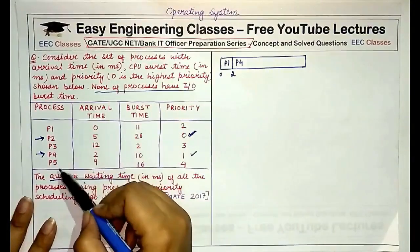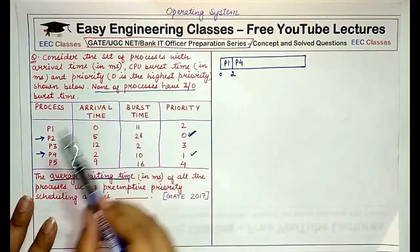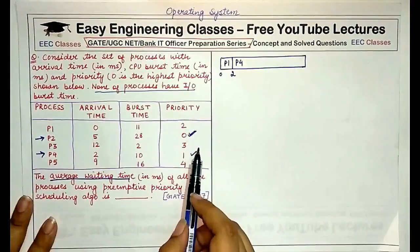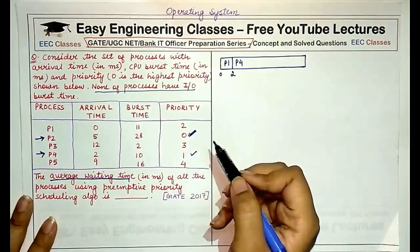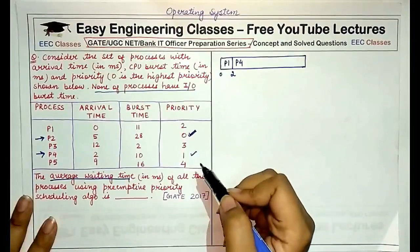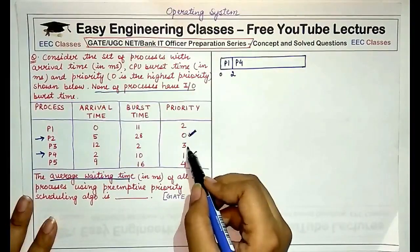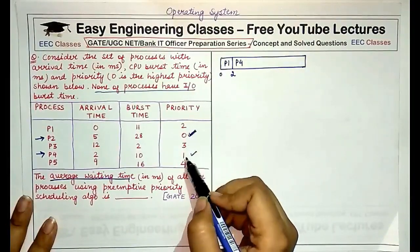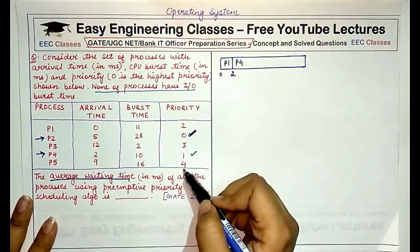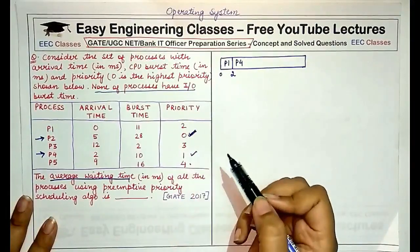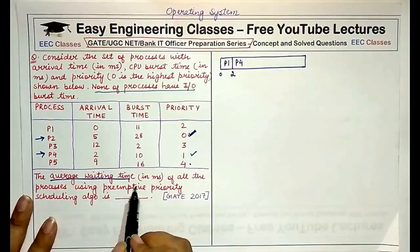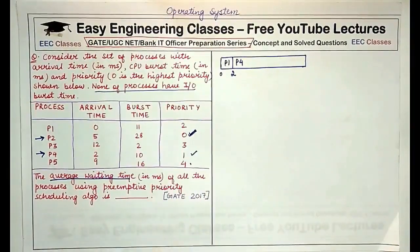You are given five processes with corresponding priorities, where zero is the highest priority and four is the lowest. That means P5 would have the least priority of four. We have to find the average waiting time in milliseconds of all these processes using the preemptive priority scheduling algorithm. You are given the arrival times, burst times, and priorities.